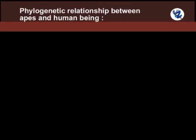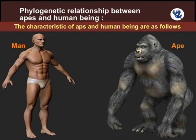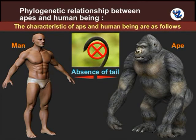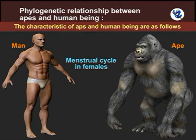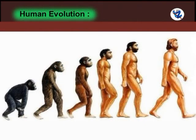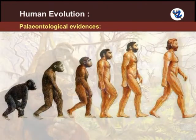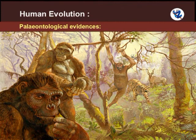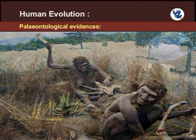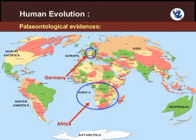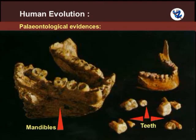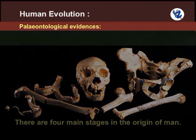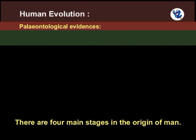Phylogenetic relationship between apes and man: Shared characteristics include absence of a tail, comparatively larger head, broad chest due to flattening of the sternum, capacity for sound production and a menstrual cycle in females. Human evolution — paleontological evidences: The ancestors of man lived on trees but man is a terrestrial animal. Man originated from ancient apes. Fossil bones of human ancestors have been discovered from Africa, Germany and other parts of Asia, including skulls, mandibles, teeth and bones like the humerus and femur. There are four main stages in the origin of man: the ape stage, the ape-man stage, primitive man and modern man.